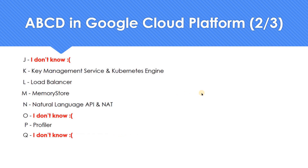Moving on to Q — Q is always a confusing letter. Even in my childhood days it was difficult to pronounce. Q for Queen was the only thing I could remember. In GCP vocabulary too, the letter Q has very few words. I was not able to find a product with the letter Q in GCP. So I don't know — that's the answer.